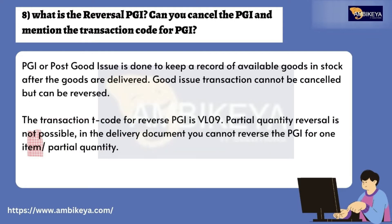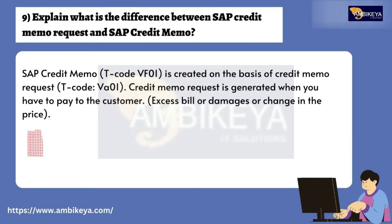Question number eight: What is reversal PGI? Can you cancel the PGI, and what is the transaction code for PGI? PGI, or Post Goods Issue, is done to keep a record of available goods in stock after goods are delivered. A goods issue transaction cannot be cancelled but can be reversed. The transaction code for reverse PGI is VL09. Partial quantity reversal is not possible in the delivery document.